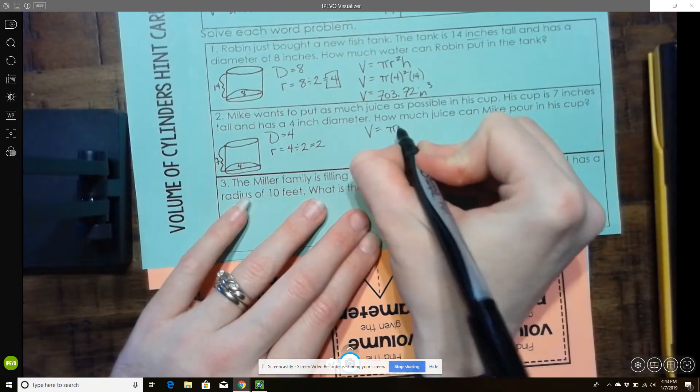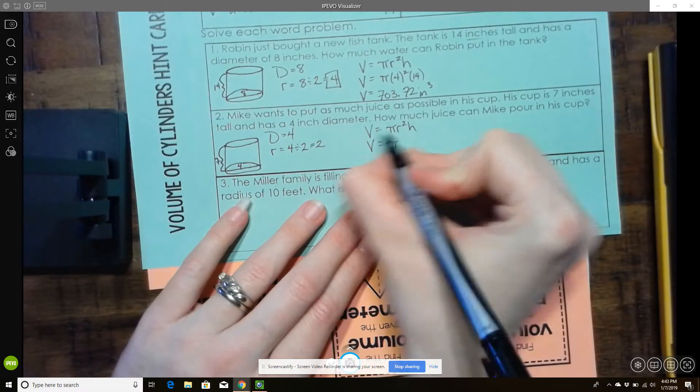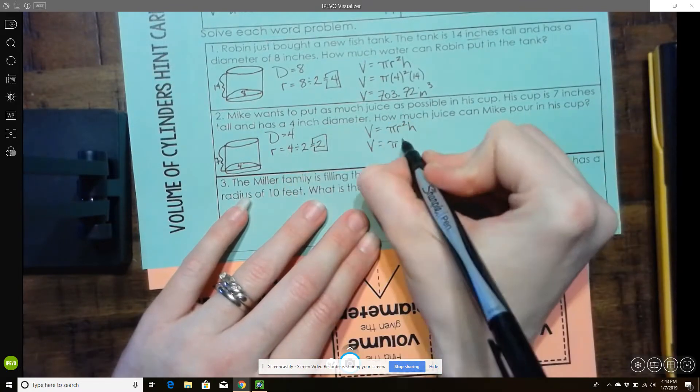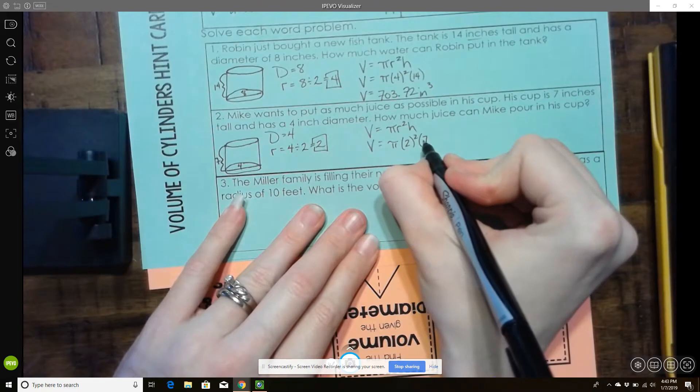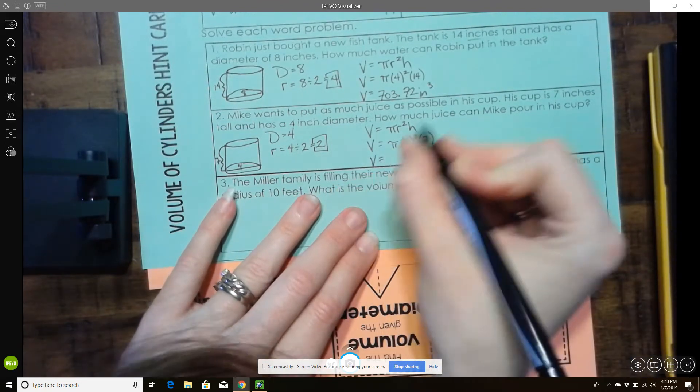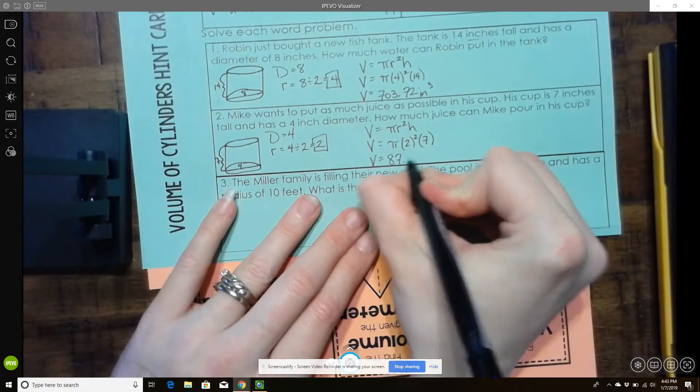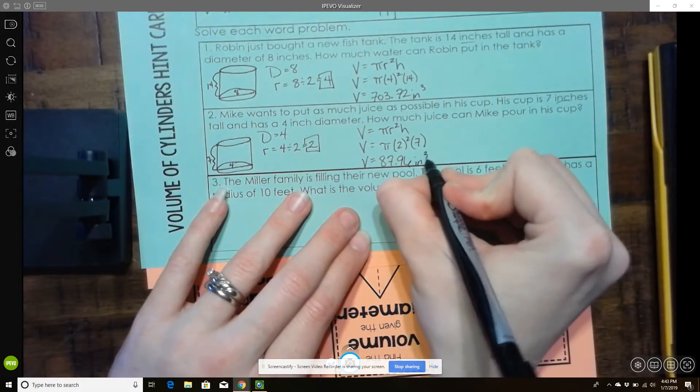So volume equals pi r squared h. And now we can plug and chug. So the radius is 2. The height is 7. Plug it into your calculator just like we've been doing. And you'll get a volume of 87.96 inches. So inches cubed.